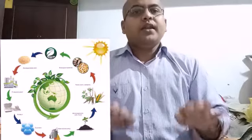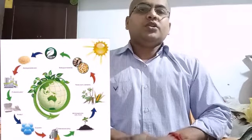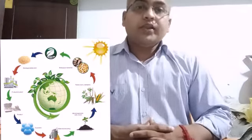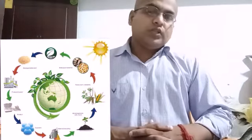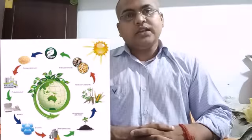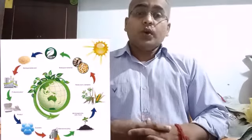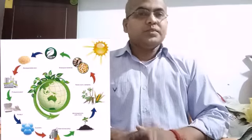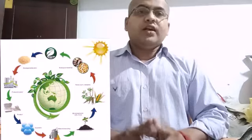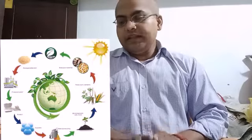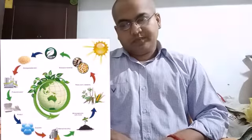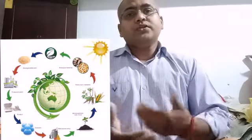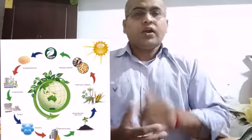Question: Name any two examples of the following: Edible roots — beetroot and carrot. Edible bulbs — onion and potato. Edible leaves — cabbage and spinach. Edible seeds — gram and pea.